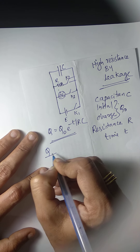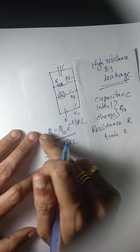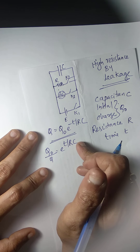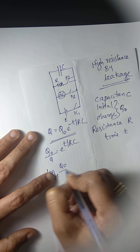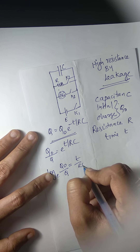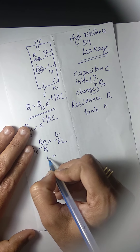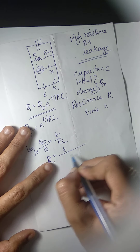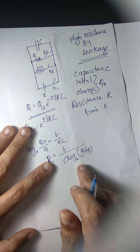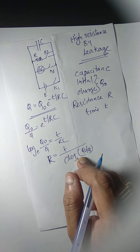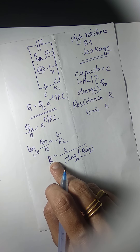Rearranging, Q0 by Q equals e raised to T by RC. Taking the natural logarithm, Q0 by Q equals T by RC. Therefore, R equals T divided by C times log(Q0/Q) to the base e. To convert from base e to base 10, multiply the denominator by 2.3026.